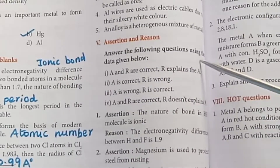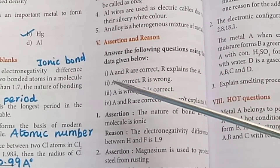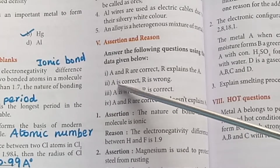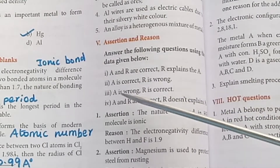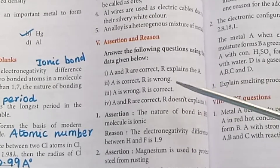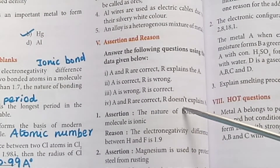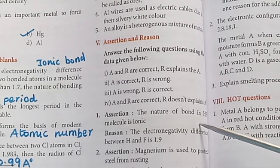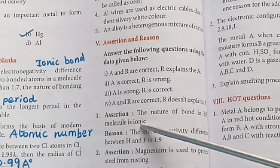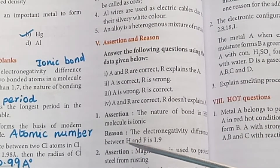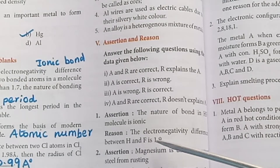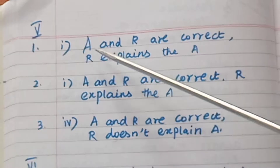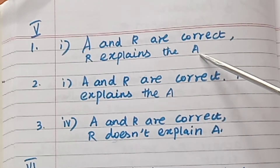Assertion and Reason. Options: 1) A and R are correct, R explains A. 2) A is correct, R is wrong. 3) A is wrong, R is correct. 4) A and R are correct, R does not explain A. Question 1 — Assertion: The nature of bond in HF molecule is ionic. Reason: The electronegativity difference between H and F is 1.9. Answer: Option 1 — A and R are correct, R explains A.